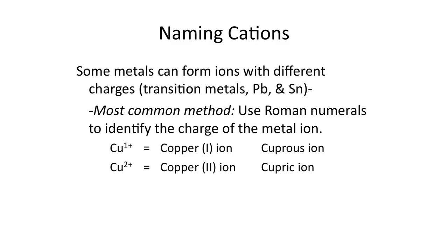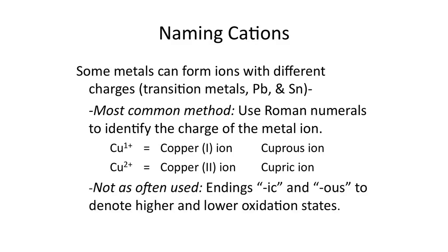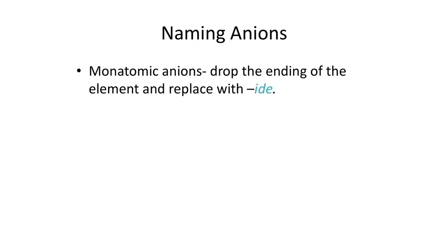For example, if I had a copper plus 1 ion, I would call that the copper(I) ion. If I had a copper ion with a charge of plus 2, I would call that the copper(II) ion. An alternate way to do this would be to use the endings -ic or -ous to denote higher and lower oxidation states. This method isn't used a whole lot anymore, so in this tutorial we will just be using Roman numerals to identify the charge of the metal ion.